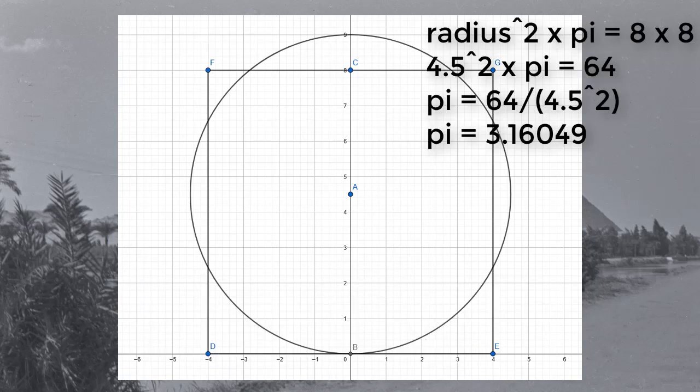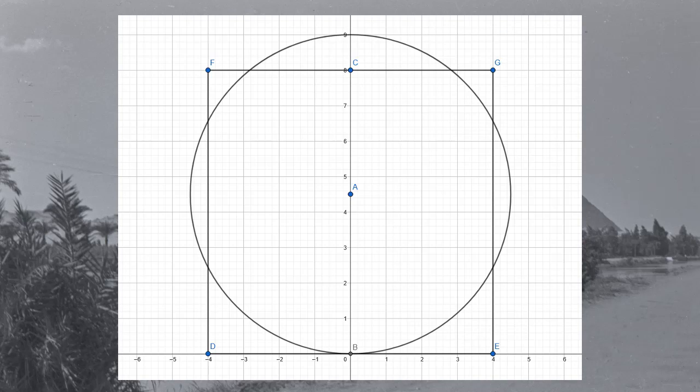Using this method, we can calculate the value of pi at about 3.16. It is a less accurate approximation of pi than the one in the pyramid, but it does show that the Egyptians understood that there was a number which, when multiplied by the diameter of a circle, gave its circumference. Conclusion: True and probably intentional.